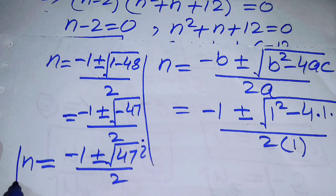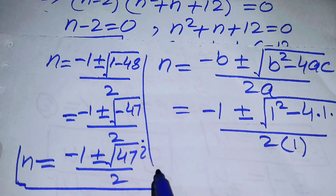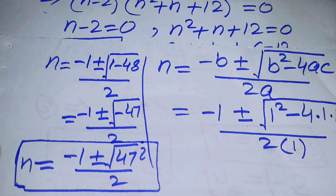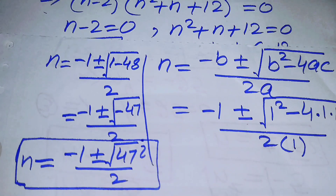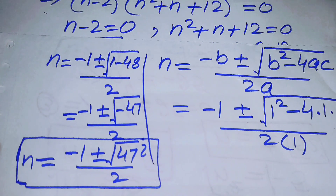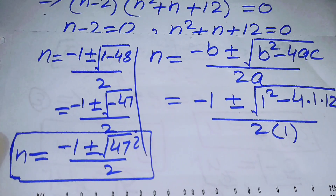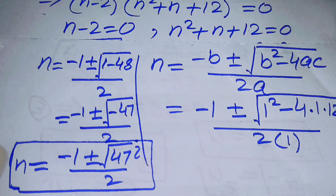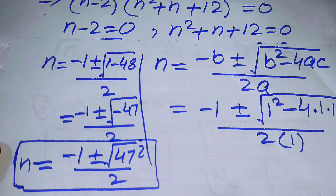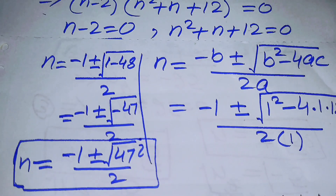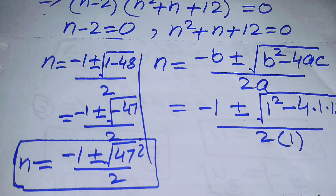These are the other two factors of the given equation, and they are complex factors. So the final answer is n = 2 and n = (-1 ± i√47) / 2. Thank you so much for watching this video — please subscribe to my channel for more exciting videos.